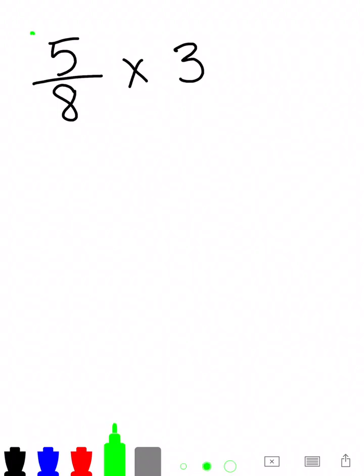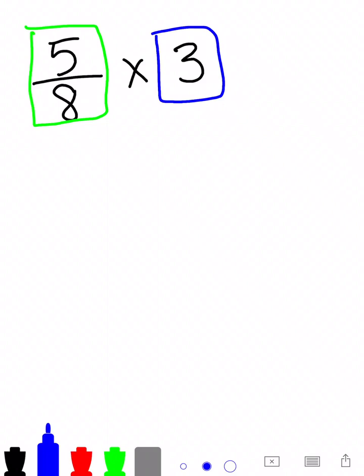Obviously we have a fraction, which is our 5 over 8. And then we also have a whole number, which is our 3. Anytime we multiply fractions, we want to make sure that if one of the things we're multiplying is a fraction, that the other thing is also a fraction. 5 eighths is already a fraction, so we're just going to leave it the way it is.